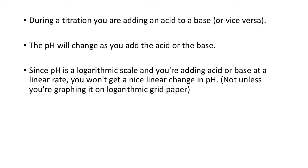During a titration, you are adding an acid to a base or vice versa. The pH will change as you add the acid and base. Since pH is a logarithmic scale and you're adding acid or base at a linear rate, you're not going to get a nice linear change in pH. You can use the pH change to work out where the equivalence point is.